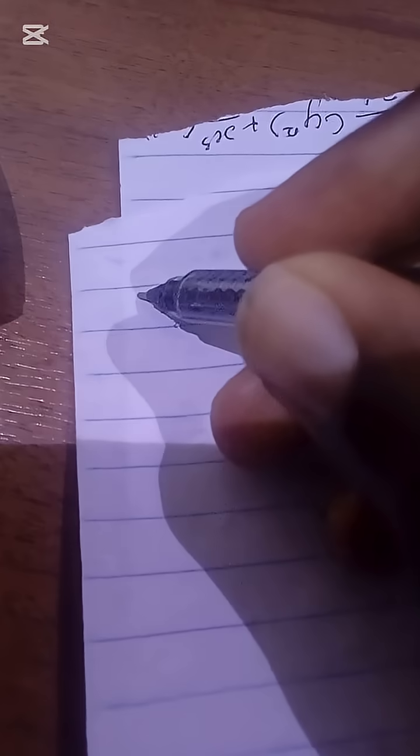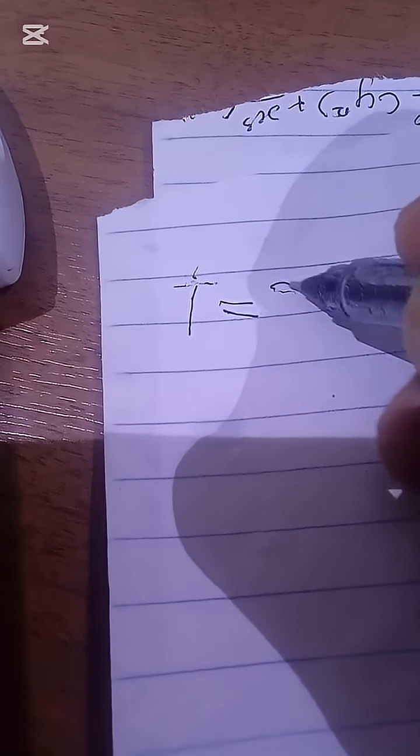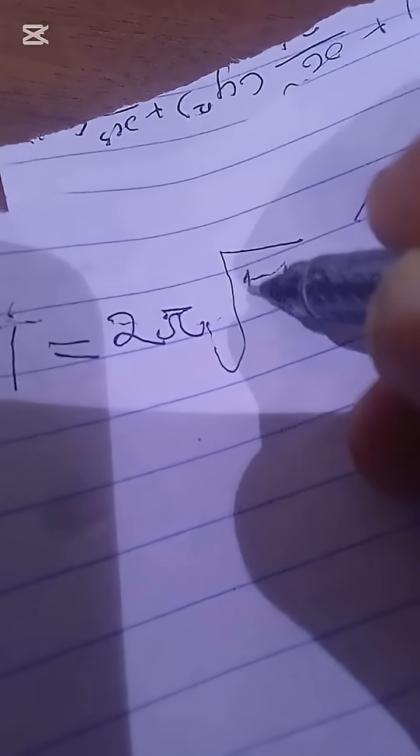Basically, the time taken for a single oscillation to happen in a mass block spring system used to be this, m, which is now mass.